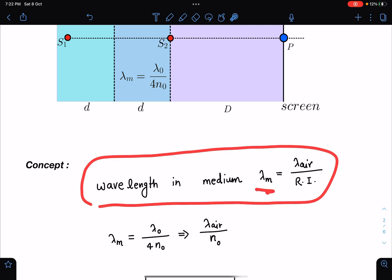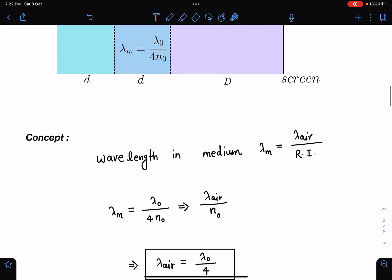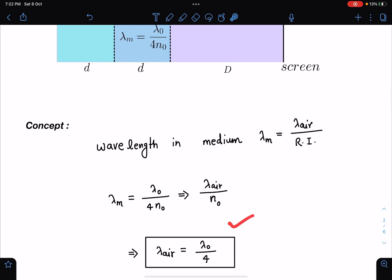So let's discuss here the concept part. The wavelength in the medium is given as lambda m equals lambda air by refractive index. Now in this particular problem here it is given as lambda 0 by 4 n0 in the medium of mu 0. So first thing which we are going to get from here is lambda air is lambda 0 by 4.